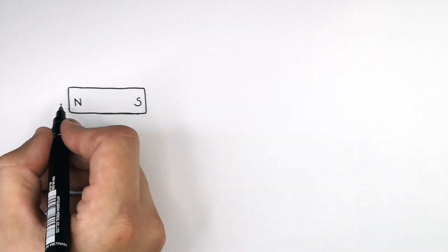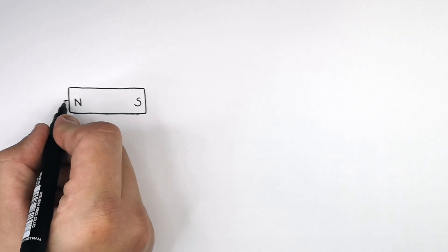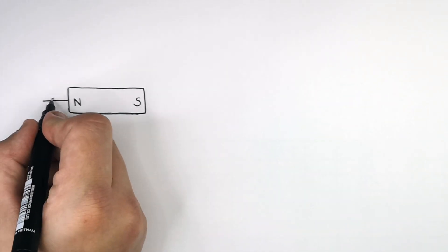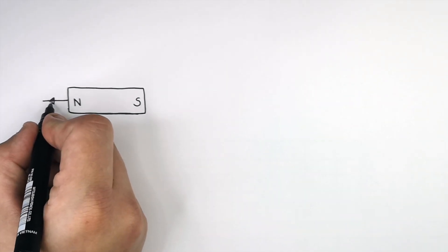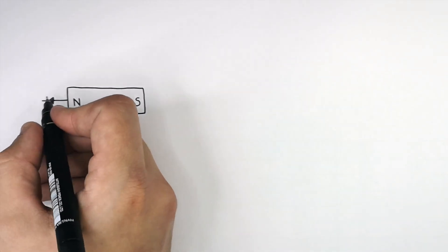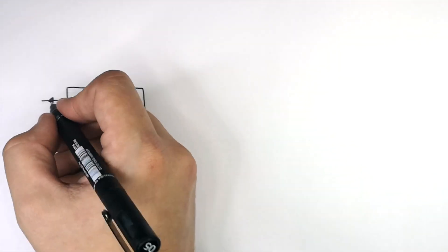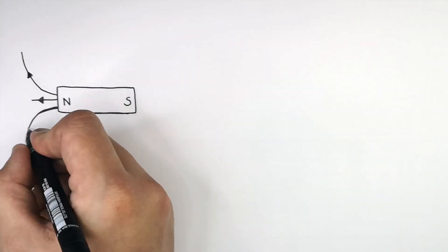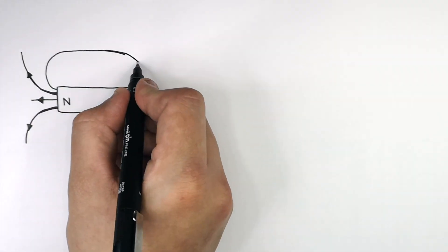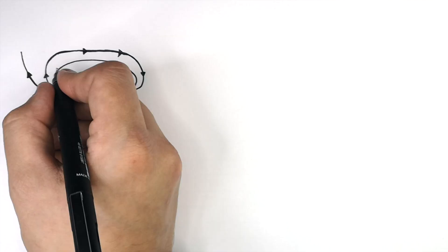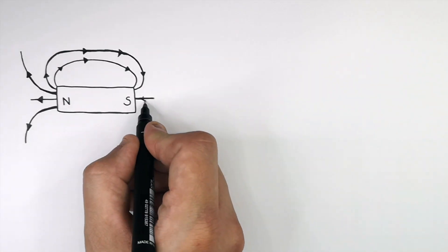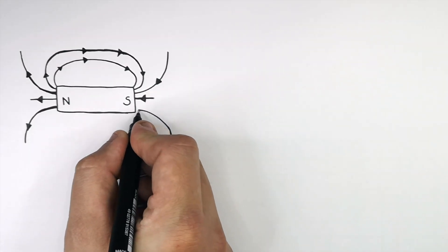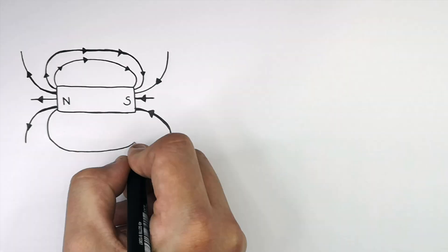The direction of the field lines shows the direction that a north pole would feel if it was in that field. What I'm drawing here is the magnetic field surrounding the magnet. The magnetic field of the magnet is represented by magnetic field lines.